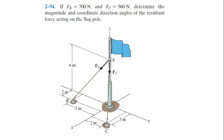Good day. We will now show the resultant Cartesian vector from given position vectors. As an example, let's answer this problem: if Fb is 700 N and Fc is 760 N, determine the magnitude and coordinate direction angles of the resultant force acting on the flagpole.